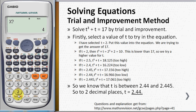I press 2 and it gives 10. This is lower than 17, so we try a higher value. I try with 3, which gives 30. 30 is higher than 17, so the solution is between 2 and 3. I try with 2.5.